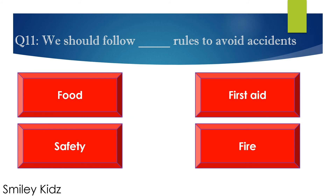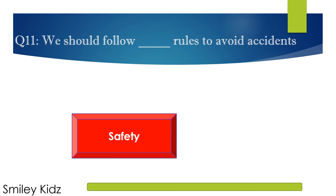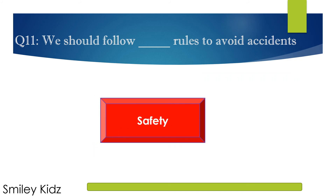Question number 11. We should follow dash rules to avoid accidents. Options are A. Foot, B. Trusted, C. Safety, and D. Fire. Your time starts now. Your time is up. The right answer is safety. We should follow safety rules to avoid accidents.